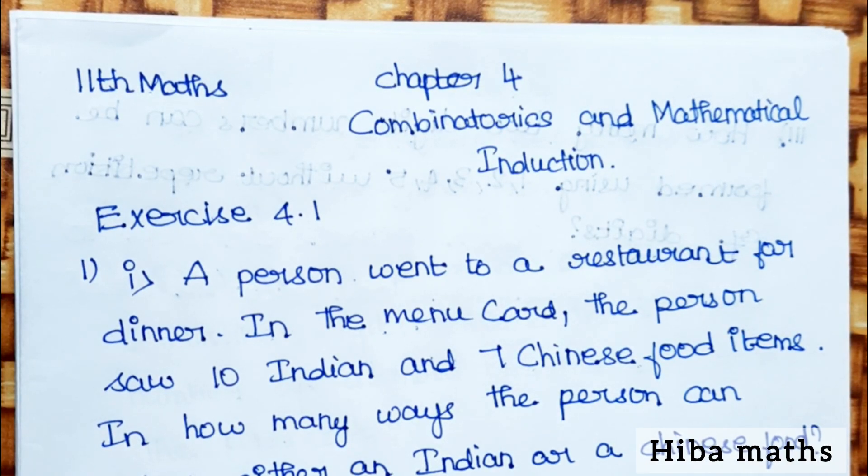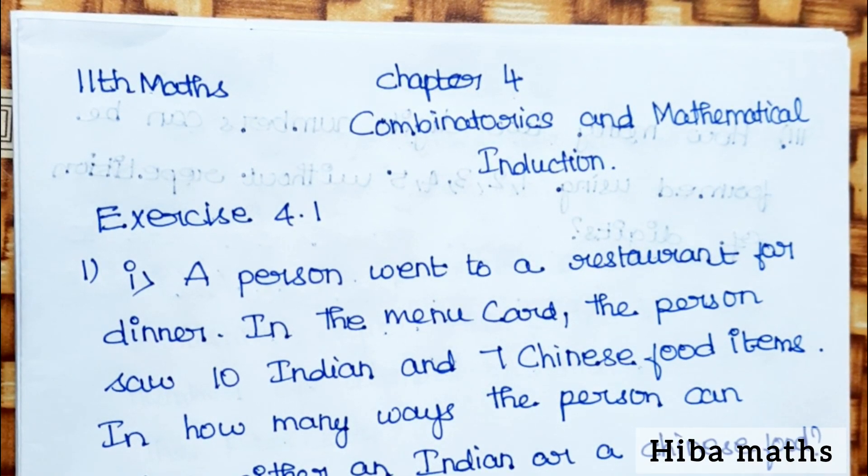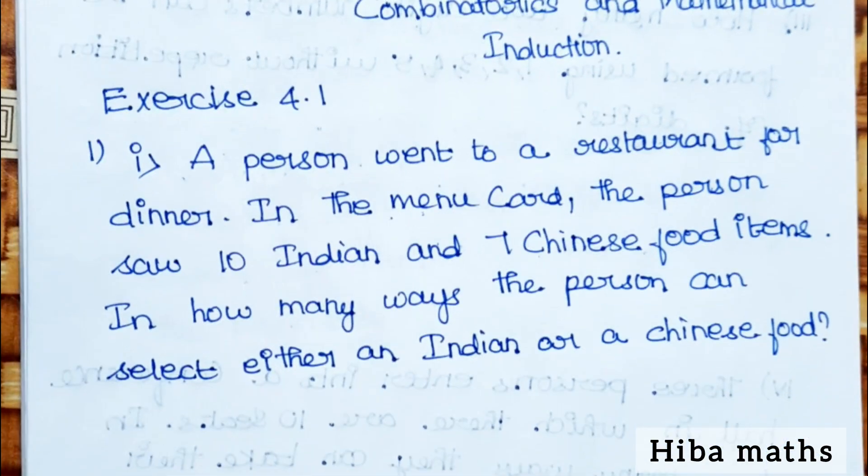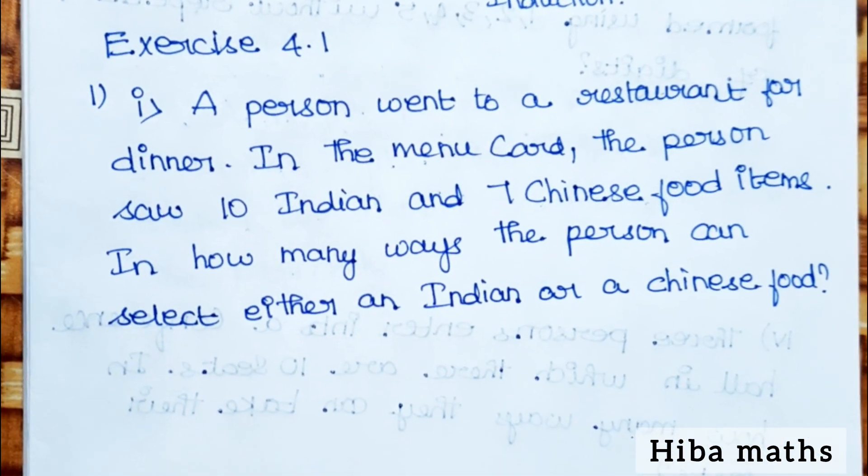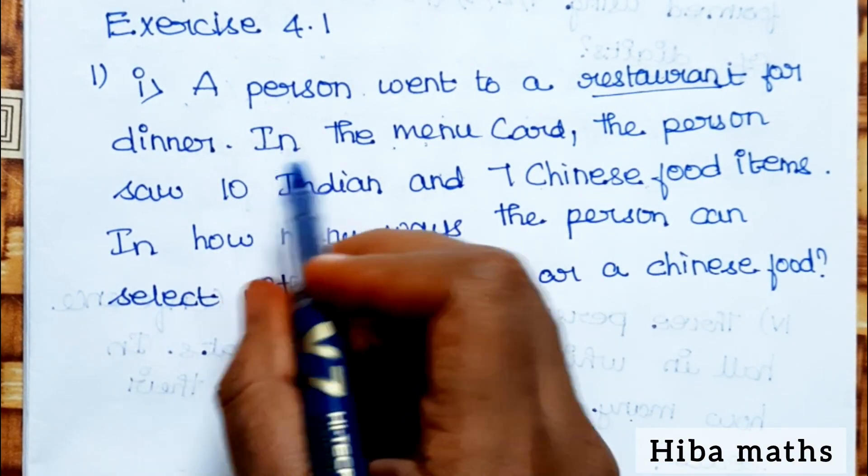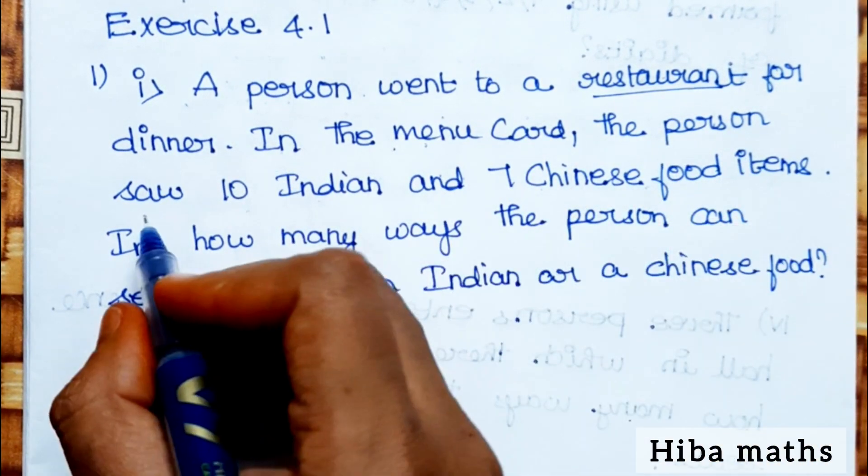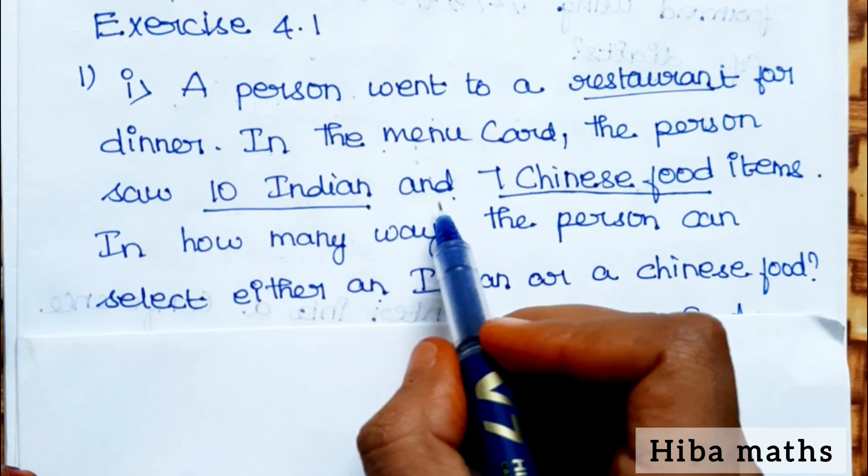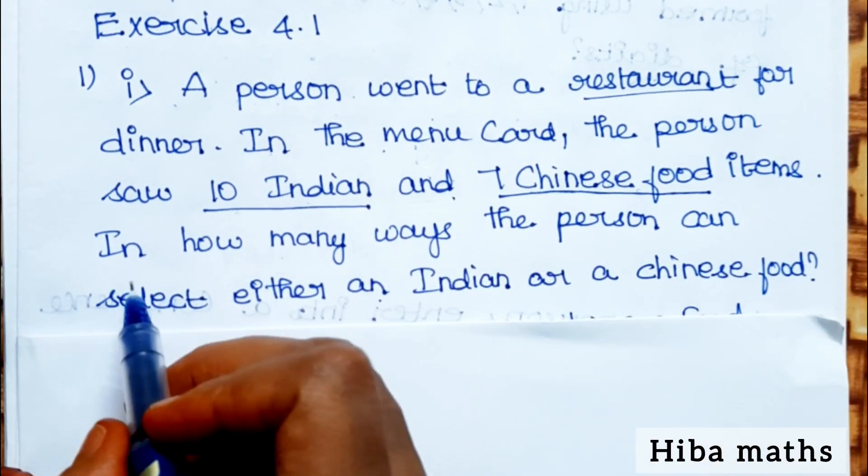Hello students, welcome to Hiba Maths, 11th Standard Maths, Chapter 4, Exercise 4.1. First question: A person went to a restaurant for dinner. In the menu card, the person saw 10 Indian and 7 Chinese food items.